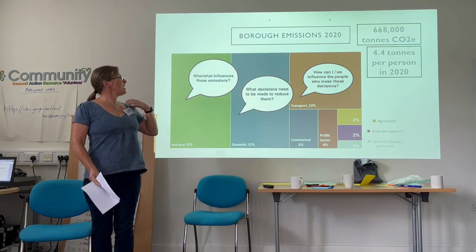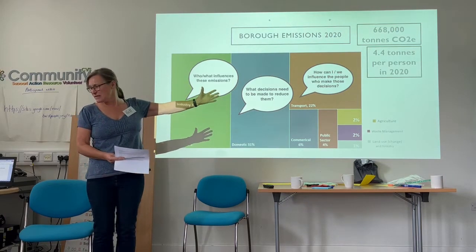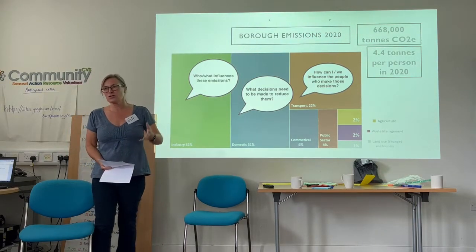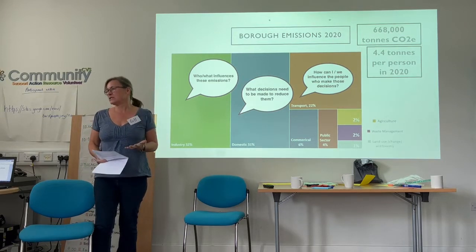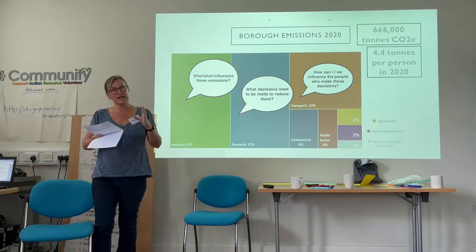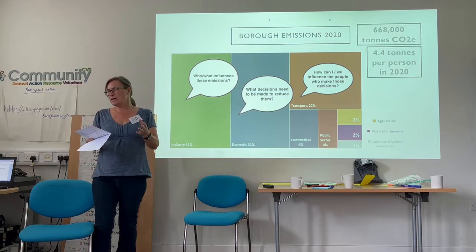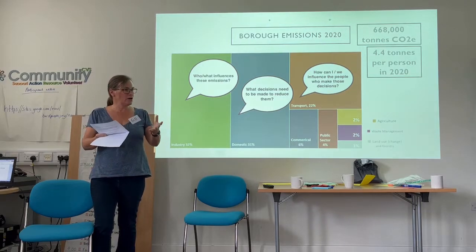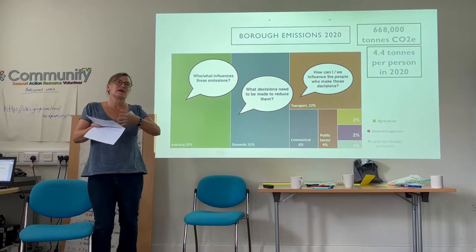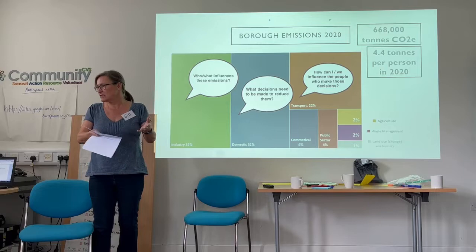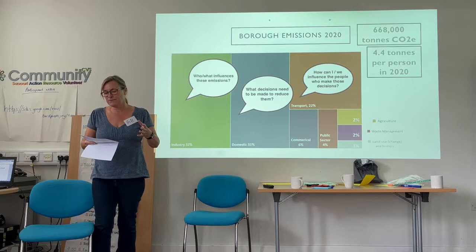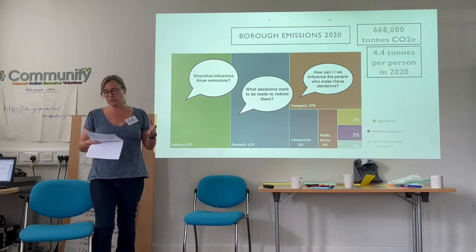Starting with this diagram of Blackburn's emissions, I want to talk about who or what influences those emissions. Industry is a thing, domestic is a thing, but actually it's all about people and people in their lives, either at home or at work, who are making decisions that have an impact on whether carbon emissions are created or not. So I want to talk a bit about who is responsible and who can do something about it.